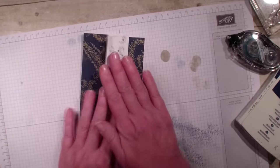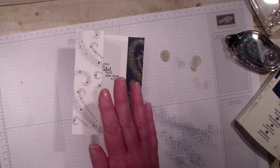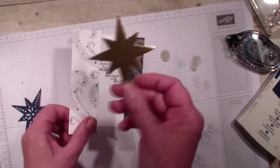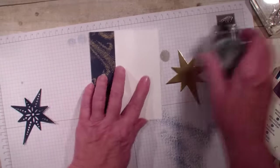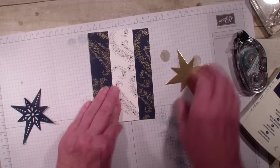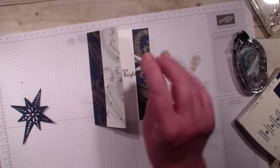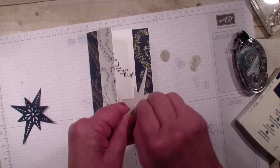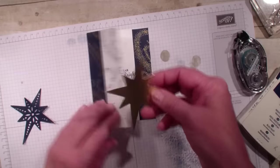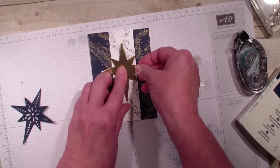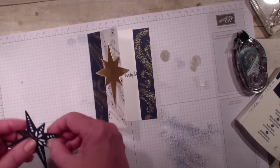And what I'm going to do next is I have already used my framelits and used my gold foil to cut out this. I'm just going to take that flap and seal it right over. Going to be using a dimensional on that gold foil star. I think I'm going to put it right in the middle there.